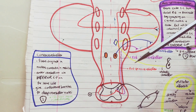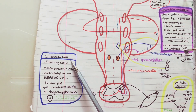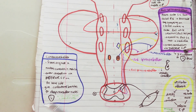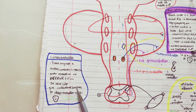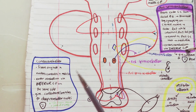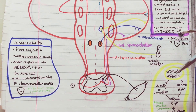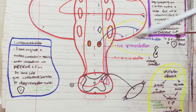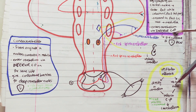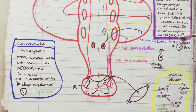Then we have the cuneocerebellar tract. The fibers originate in the nucleus cuneatus in the medulla and enter the cerebellum via the inferior cerebellar peduncle on the same side — they don't cross — but they do give collateral branches to the deep cerebellar nuclei. This pathway carries information from the upper limb and joint muscles. Finally, there are the vestibular afferents: some fibers go directly to the cerebellum via the inferior cerebellar peduncle, and others go via the vestibular nuclei, also via the inferior cerebellar peduncle.